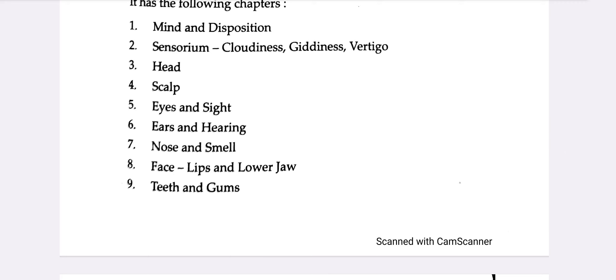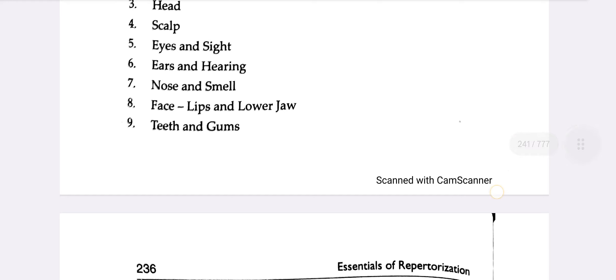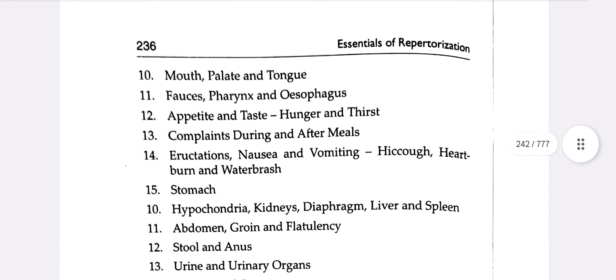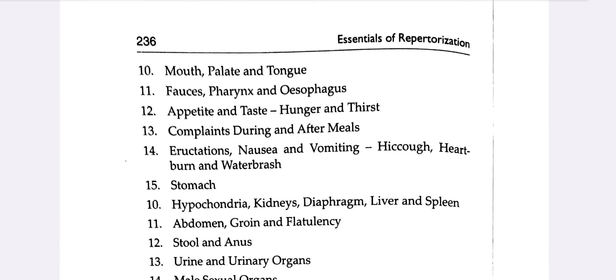Subsequent chapters cover: Ear and Smell — kept separately; Face including Lips; Lower Jaw; Teeth and Gums; Mouth; Palate; Tongue together; Fauces; Pharynx and Esophagus; Appetite and Taste; Hunger and Thirst; Complaints During and After Meals; Eructation; Nausea and Vomiting.